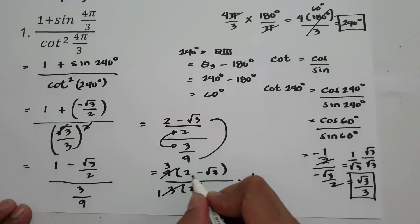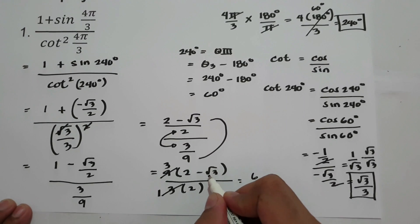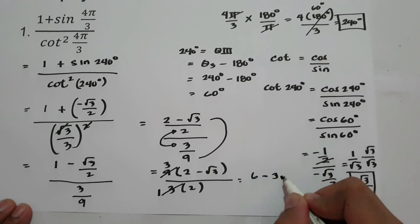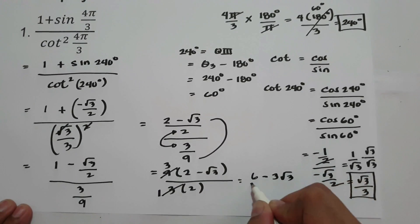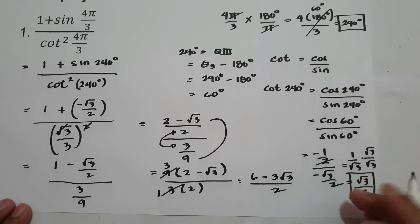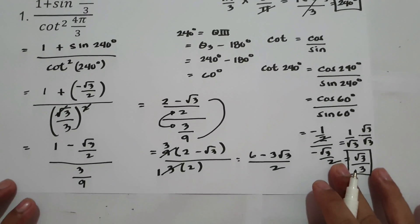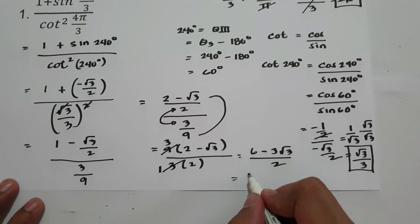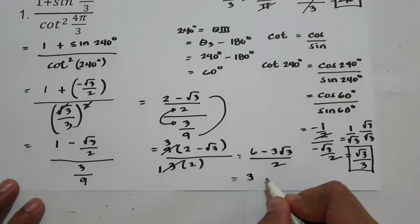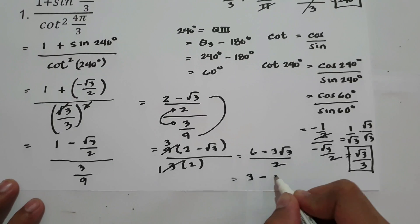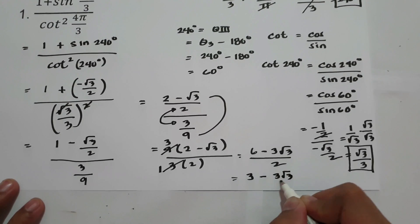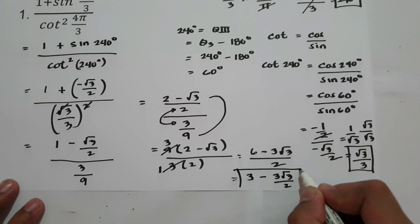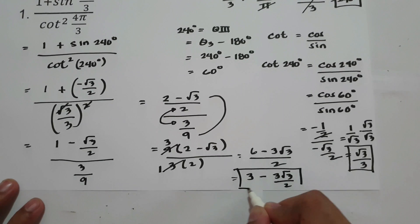And 3 times negative square root of 3 is negative 3 square root of 3 over 2. So our final answer is 6 divided by 2, that is 3, minus 3 square root of 3 over 2. This is our final answer.